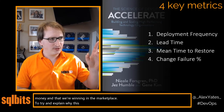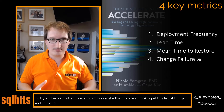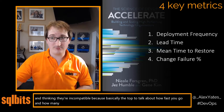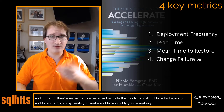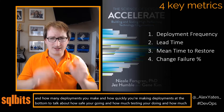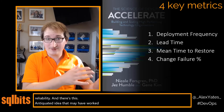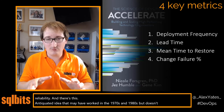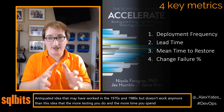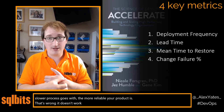A lot of folks make the mistake of looking at these metrics and thinking they're incompatible. The top two talk about how fast you go and how many deployments you make, while the bottom two talk about how safe you're going and how much testing you're doing. There's this antiquated idea — which may have worked in the 1970s and 80s but doesn't work anymore — that the more testing you do, the slower your process goes but the more reliable your product is. That's wrong. It doesn't work that way anymore.